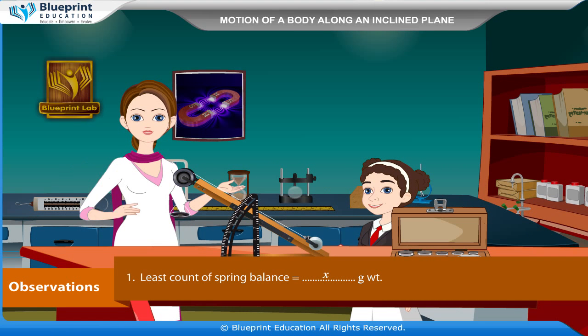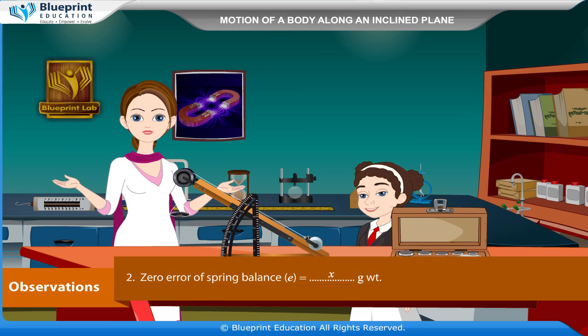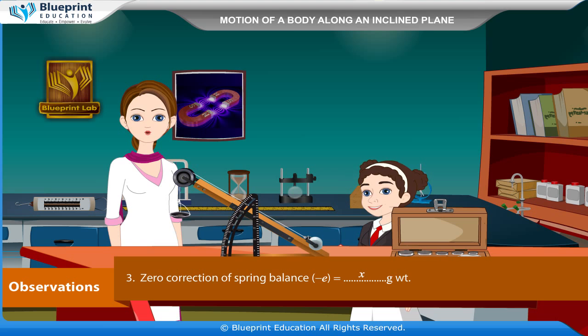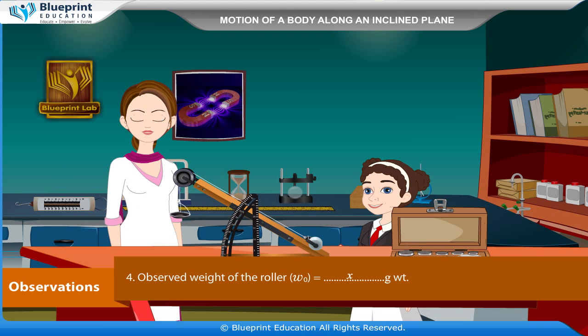Observations: Least count of spring balance is equal to x gram weight. Zero error of spring balance E is equal to x gram weight. Zero correction of spring balance minus E is equal to x gram weight.